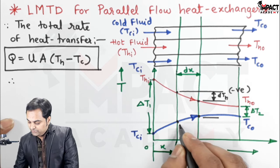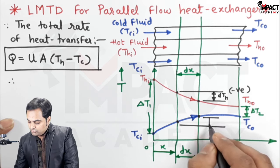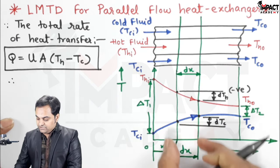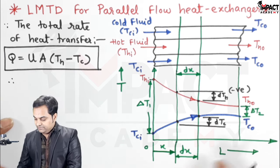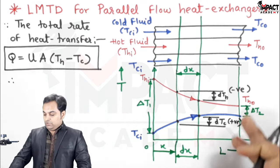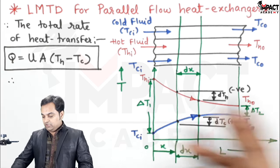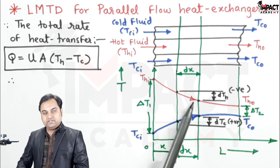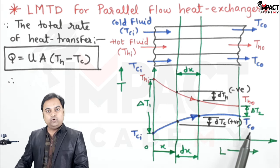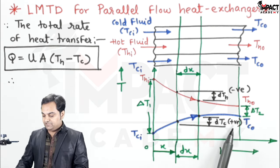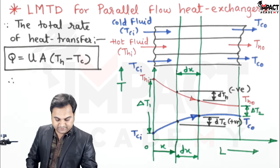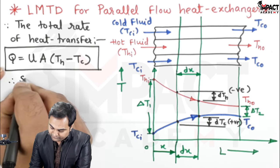For the cold fluid along the length of the heat exchanger the final temperature is more than the initial temperature, so it is gaining temperature. DTC — the change in temperature for small length DX for the cold fluid — would be positive. DTH is negative because final minus initial gives a negative value, whereas for the cold fluid final minus initial gives a positive value.